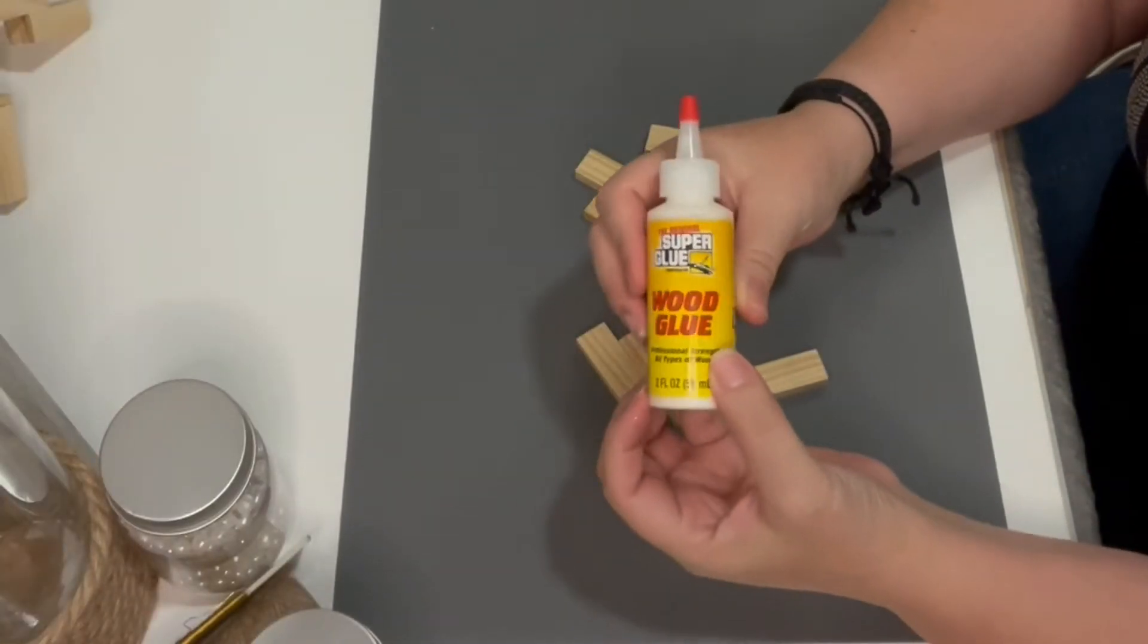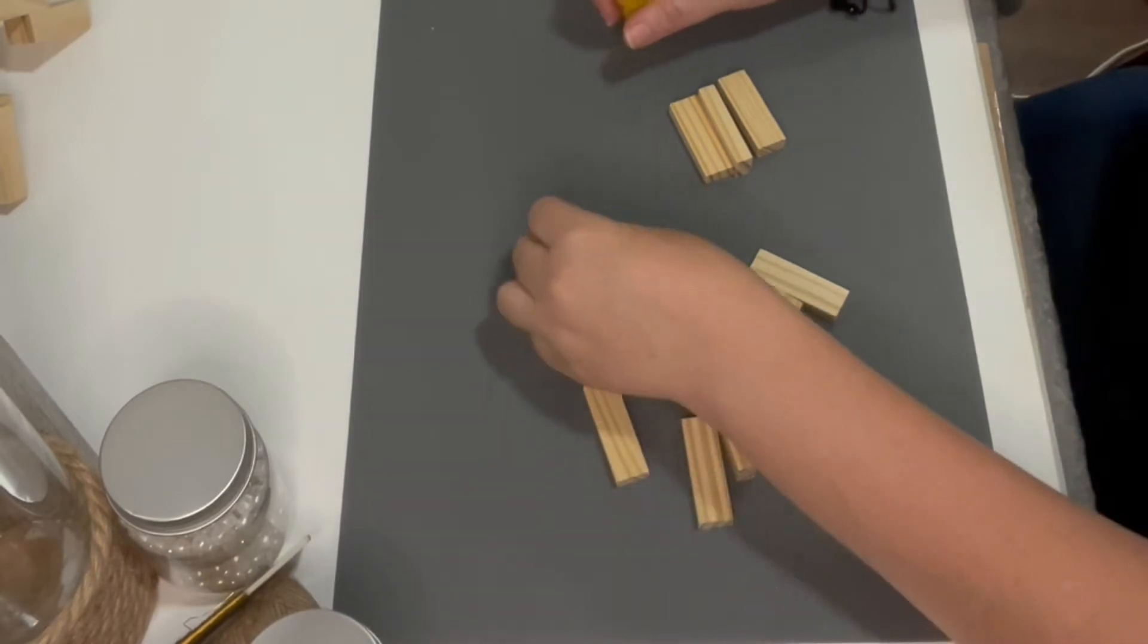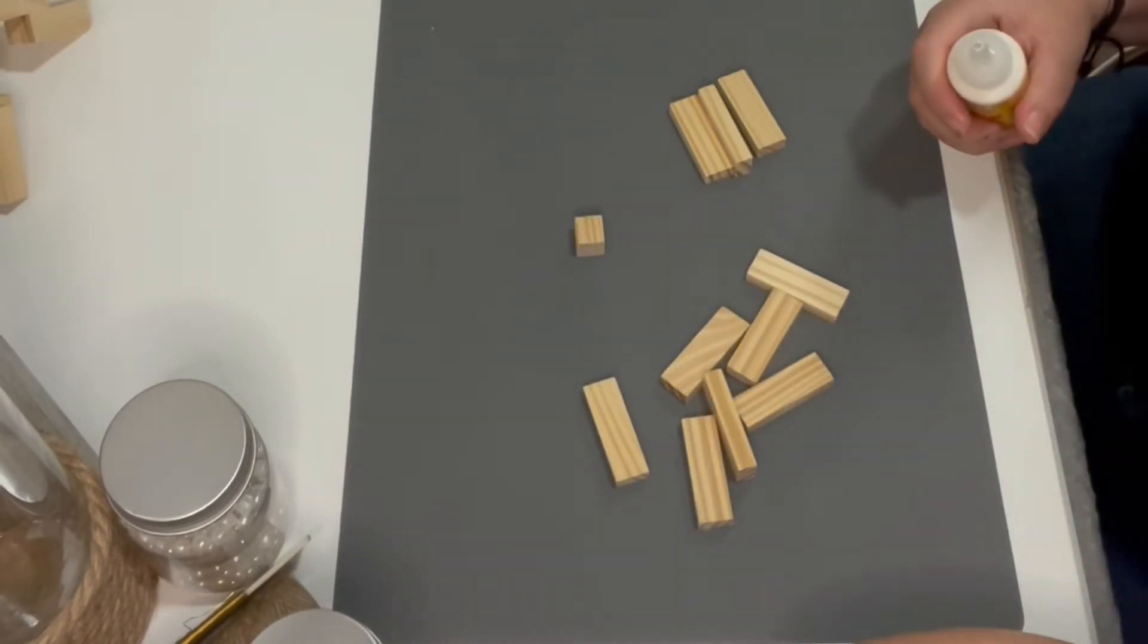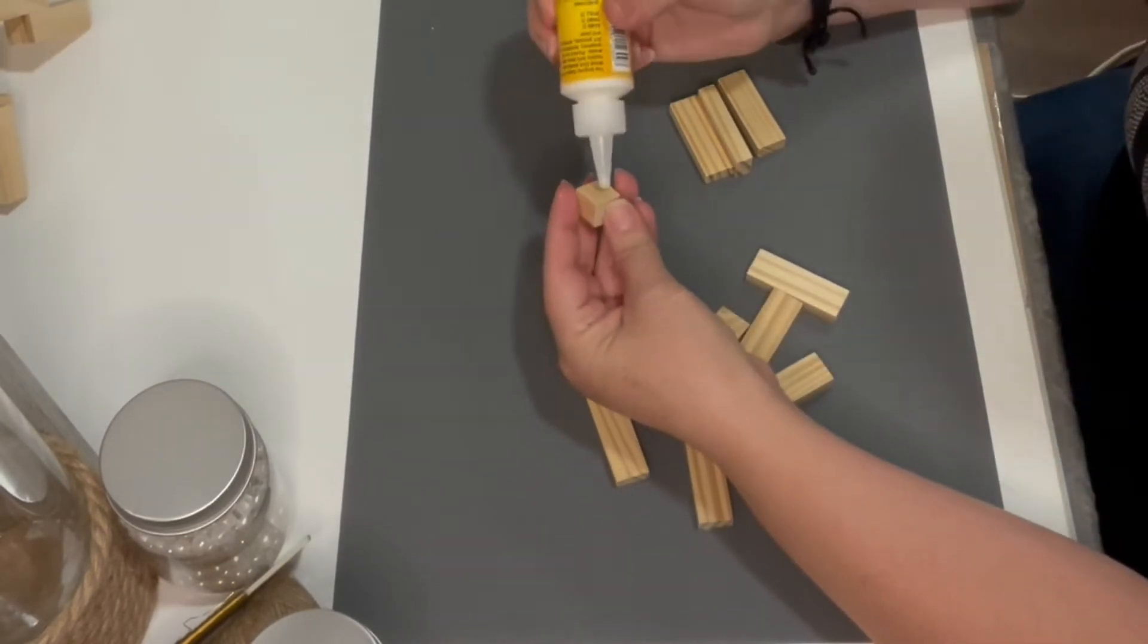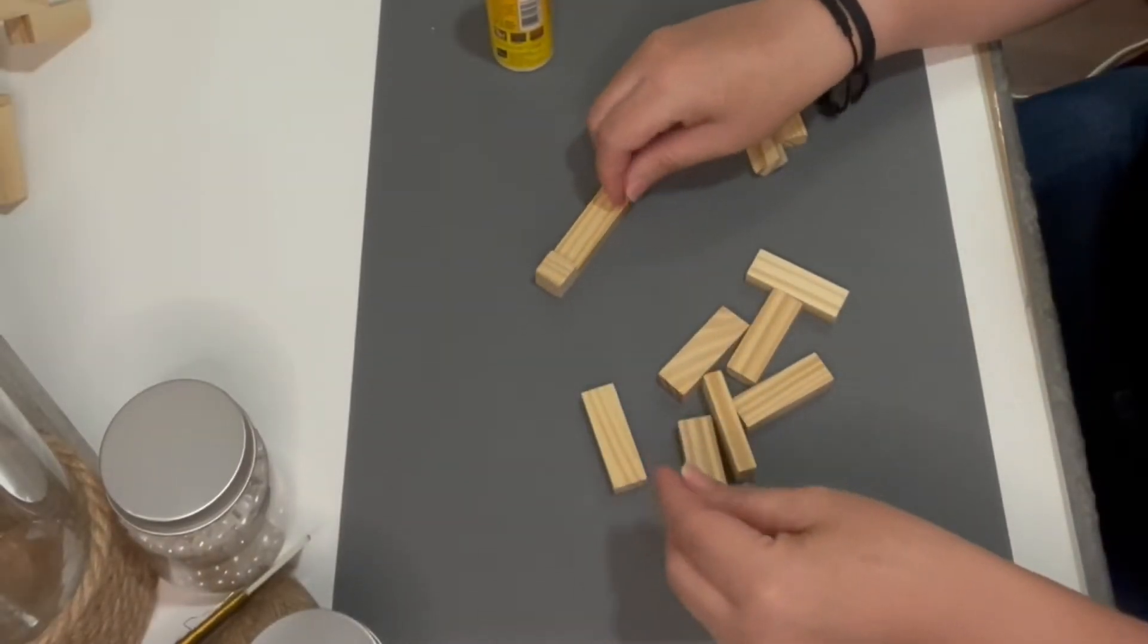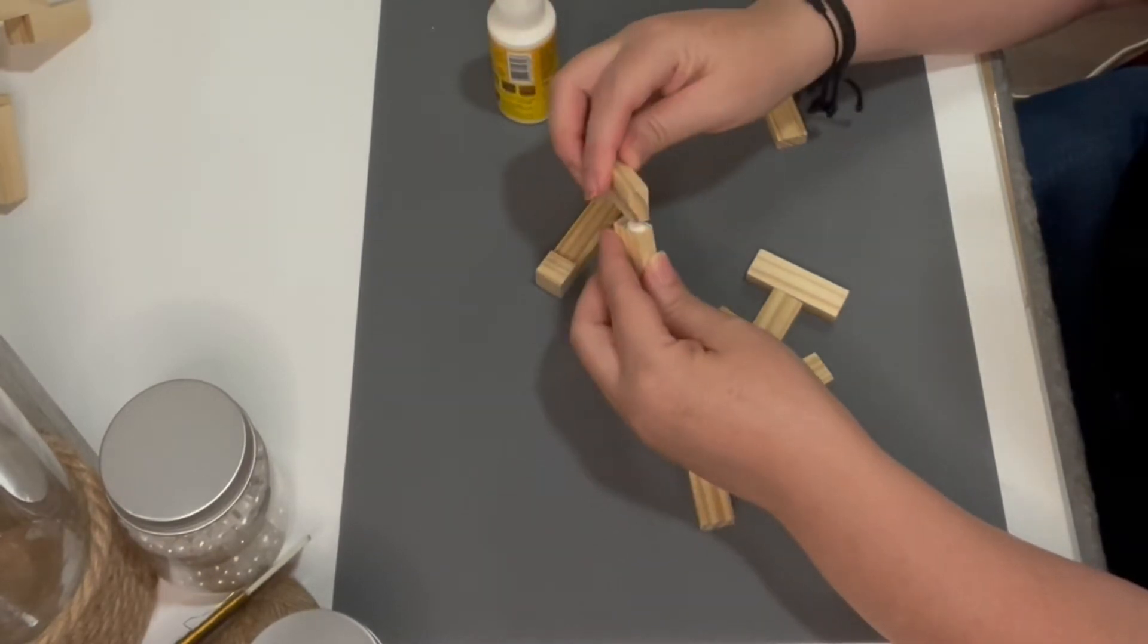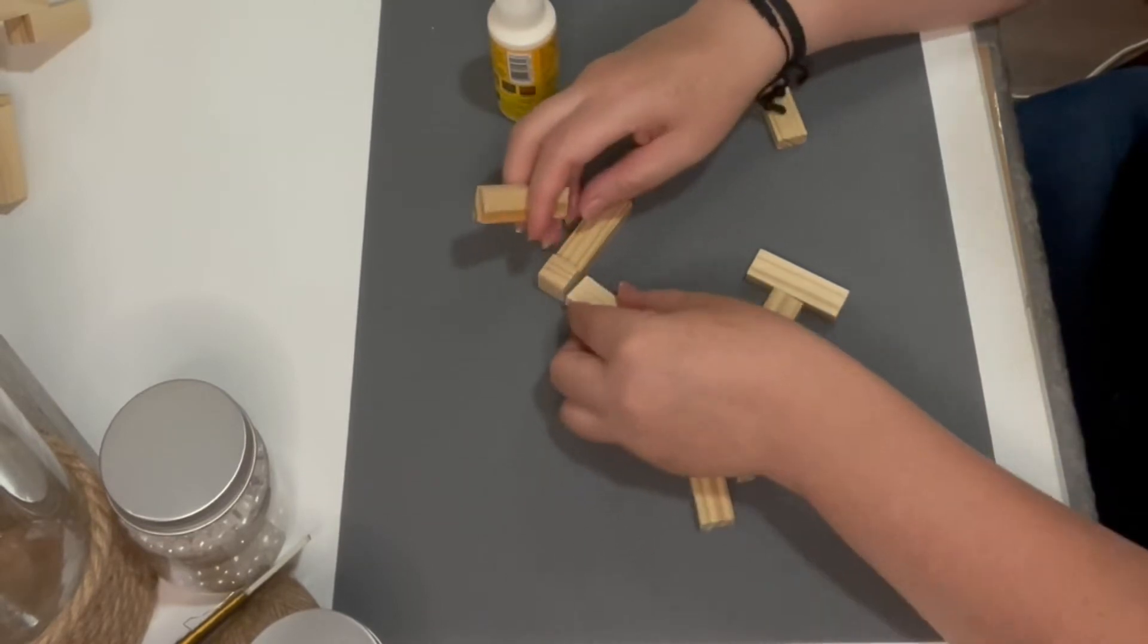We'll be using some wood glue for this project. We're going to give our little glue gun a break for now. To start out our Christmas tree, we're going to use this little block that you can get in a package at the dollar tree. We're going to use this little square as our foundation and start by gluing two of our blocks onto it.